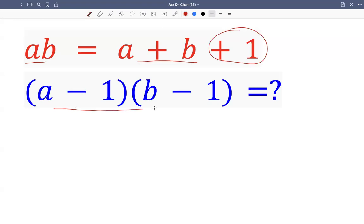We want to evaluate this expression. So let's FOIL this, which means we want to do double distributions. We multiply A with B, we multiply A with negative one, we multiply negative one with B, then negative one with negative one.